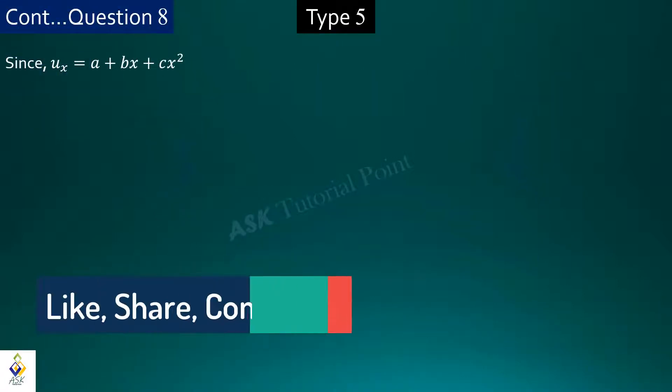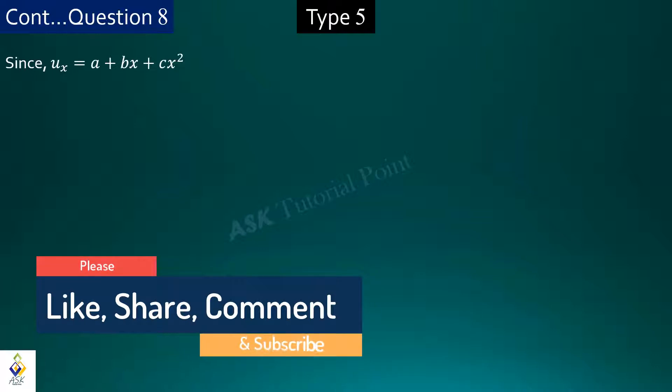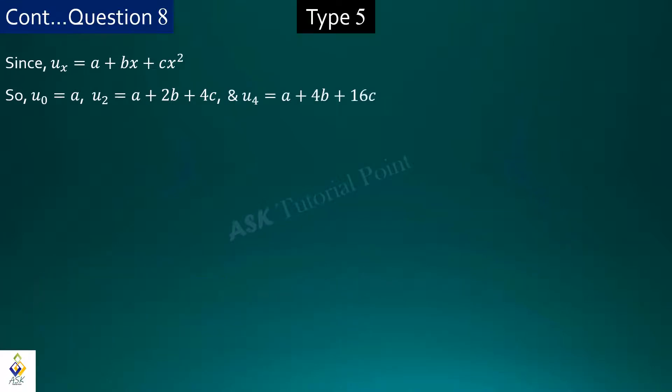Since ux is equal to a plus bx plus cx square, putting x equal to 0 we get u0 equal to a. Putting 2 we get u2 equal to a plus 2b plus 4c. Putting 4 we get u4 is equal to a plus 4b plus 16c.